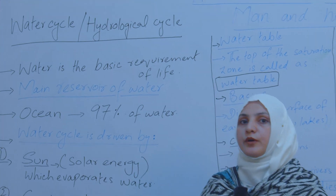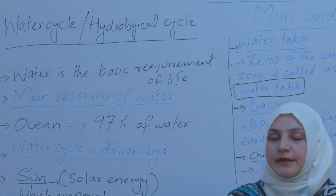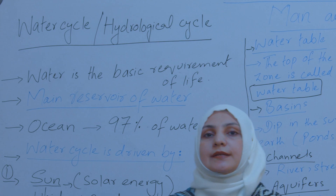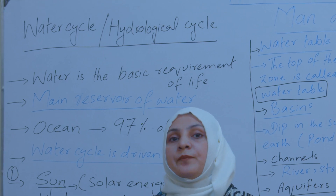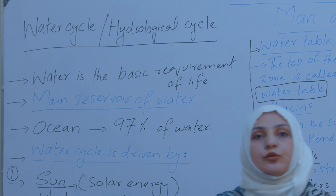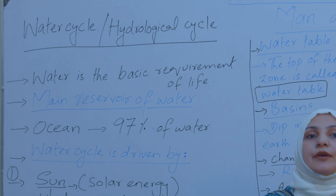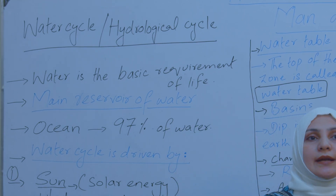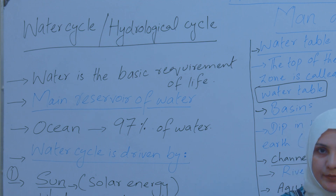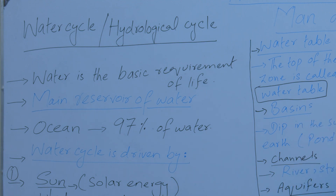So 'hydro' represents water. This cycle is related with water — the circulation of water between the living organisms and the environment. So let's start the discussion about it.